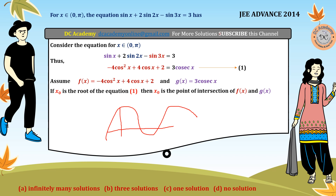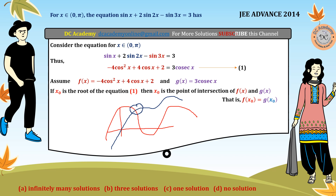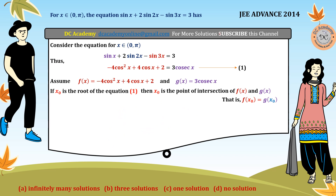We draw an arbitrary f(x) curve and another curve g(x). Wherever they intersect, that is a point where both curves have the same value — meaning f(x₀) = g(x₀), which makes x₀ a solution of the equation. This technique is called the graphical method. So now we need to try to plot the graph of f(x).